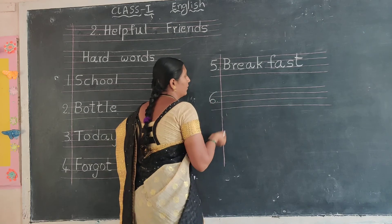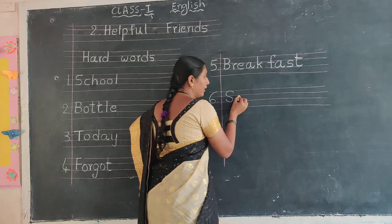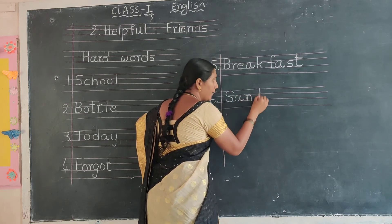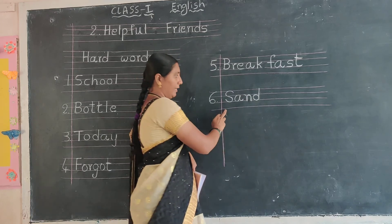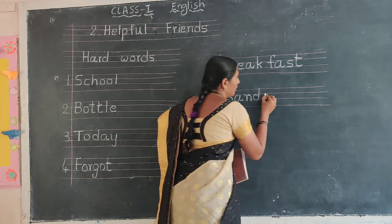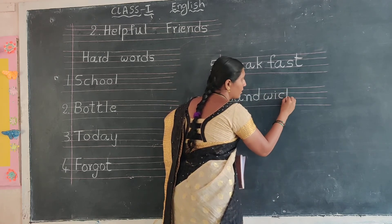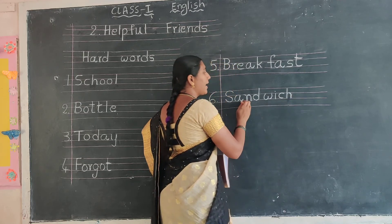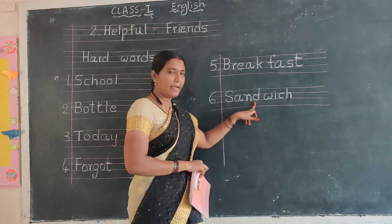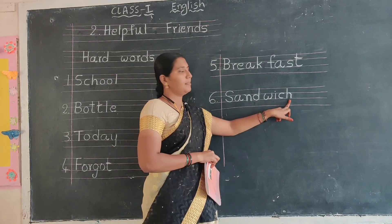Number six in the margin. Capital letter S. S-A-N-D. Sand. W-I-C-H. Which. Sandwich. S-A-N-D, Sand. W-I-C-H, Which. Sandwich. Sandwich is also a food item. S-A-N-D, Sand. W-I-C-H, Which. Sandwich.